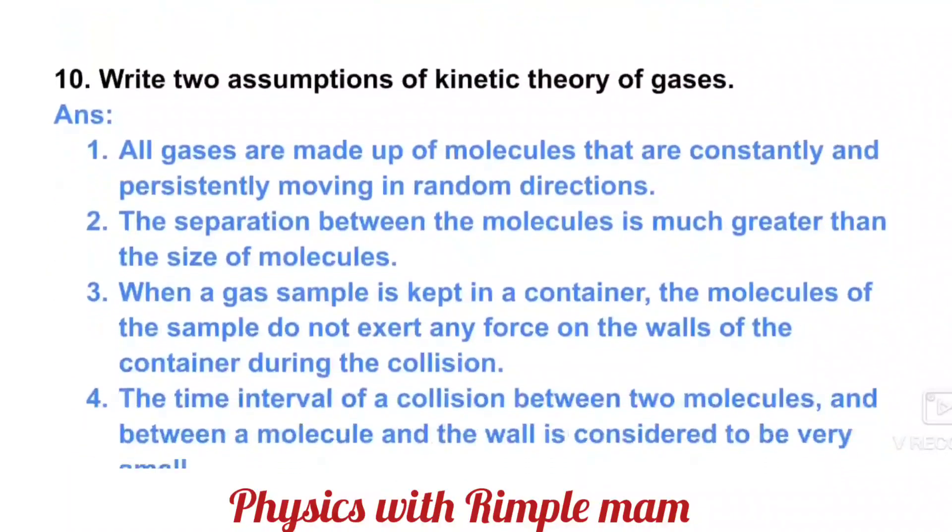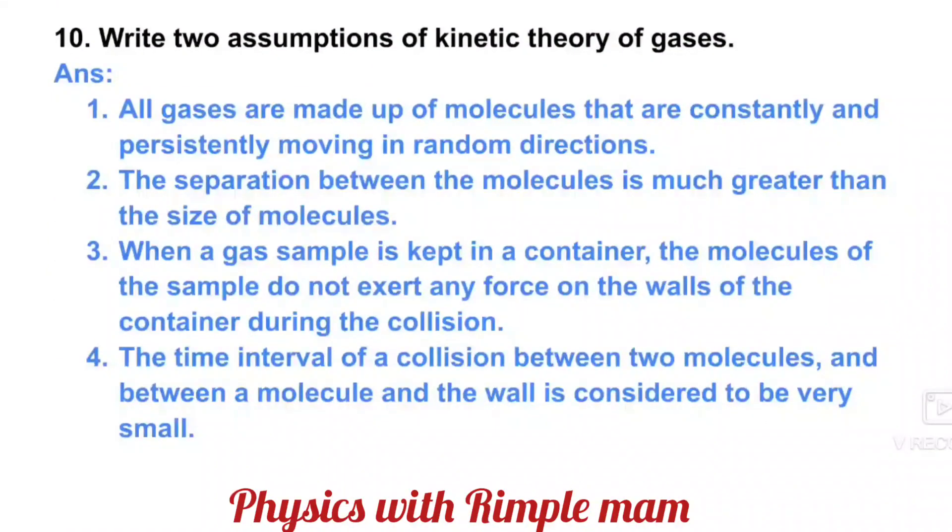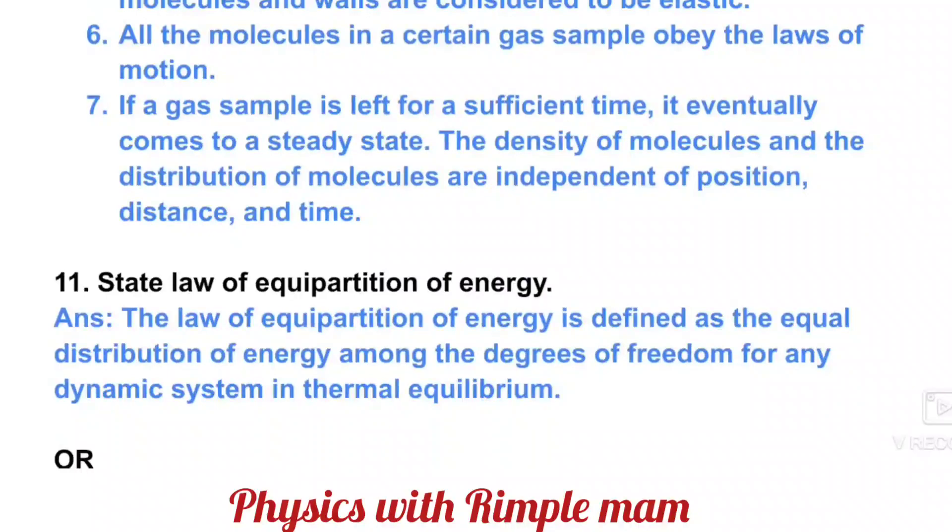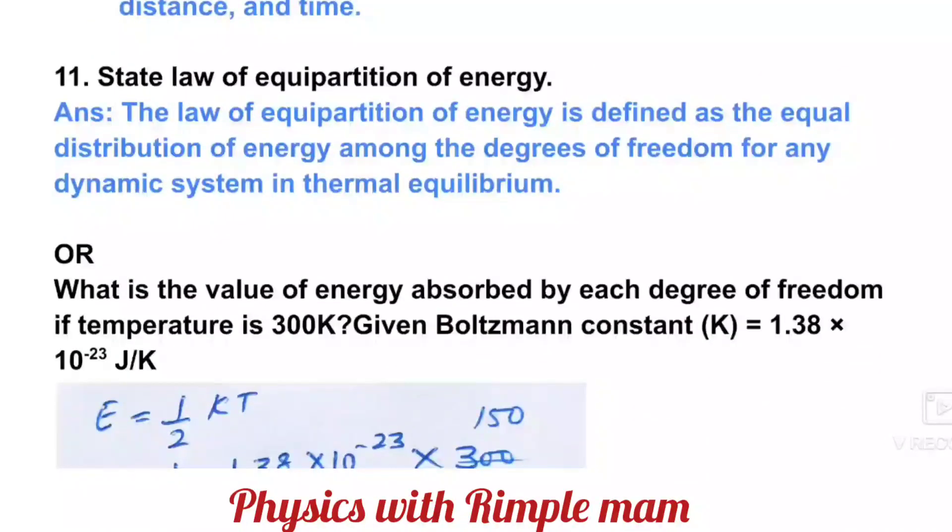In thermodynamics, a very slow process is called a quasi-static process. Next: Define isothermal process. An isothermal process is a process in which the pressure and volume of the system change at constant temperature. In this, temperature remains constant while you change pressure or volume. Next: Write two assumptions of kinetic theory of gases. There are seven assumptions - it's your choice which ones you learn well and write.